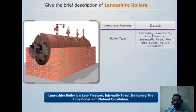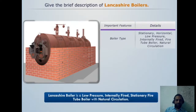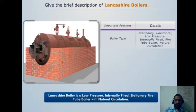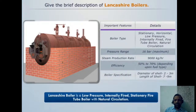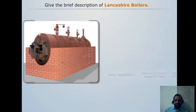The Lancashire boiler is a low-pressure, internally fired, stationary fire tube boiler with natural circulation. The boiler type is stationary, horizontal, low-pressure, internally fired, fire tube boiler with natural circulation. Its pressure range is up to 16 bar, steam production rate is 9000 kg per hour, and efficiency is 50 to 70 percent.